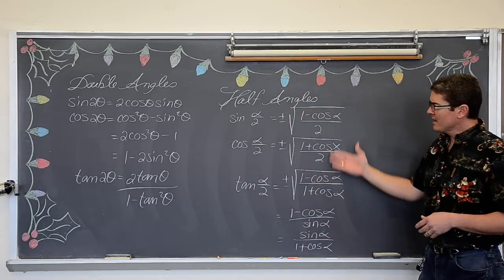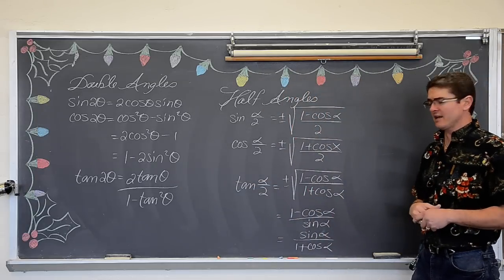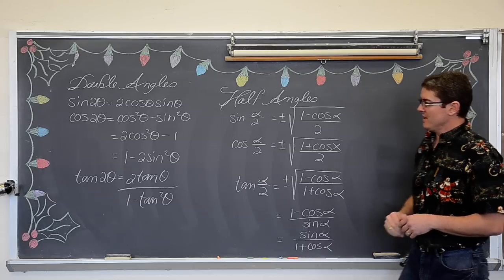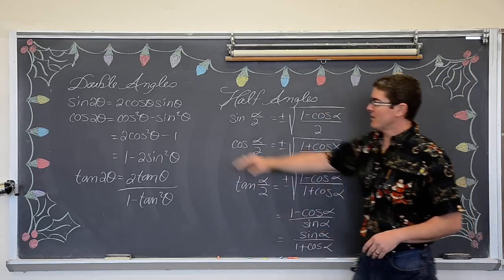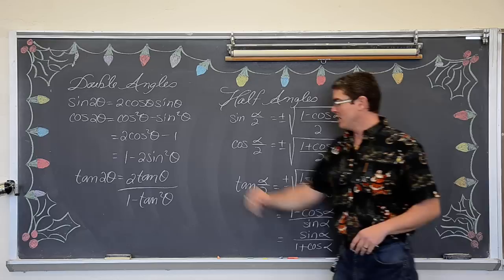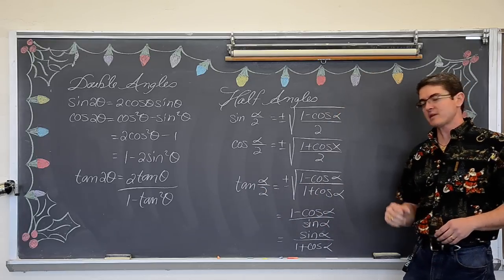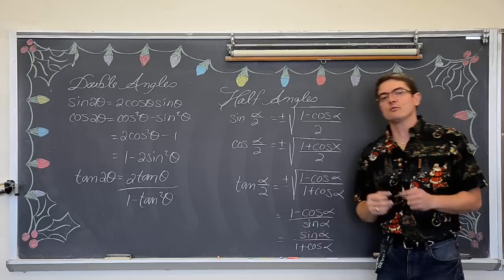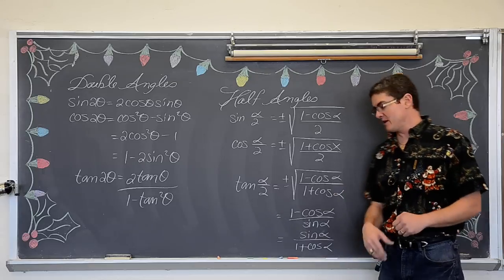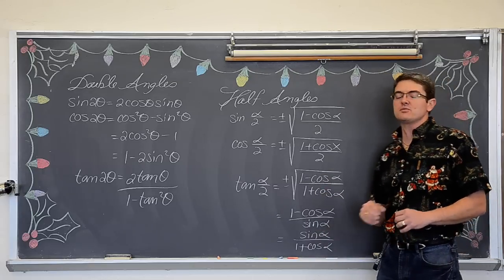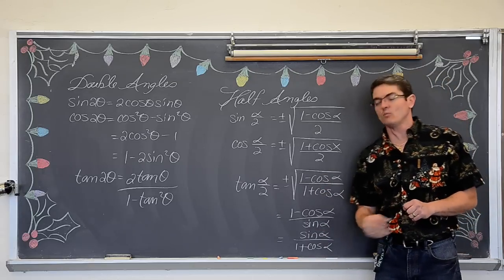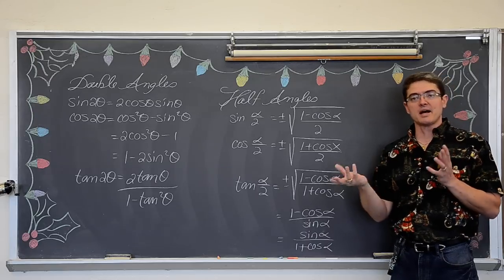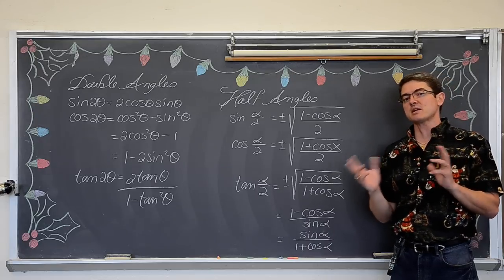Then we have the half angle identities: one for sine, one for cosine, and for tangent — kind of like cosine — you again have three choices. If we are doing proofs or verifying identities, we are absolutely going to have to use the right one of these three choices to make sure we get the same answer on both sides.